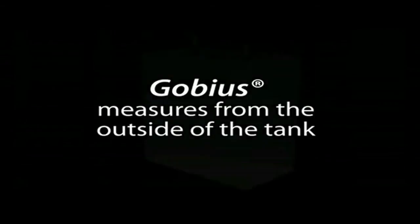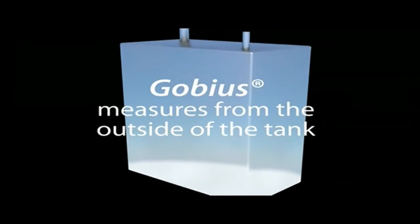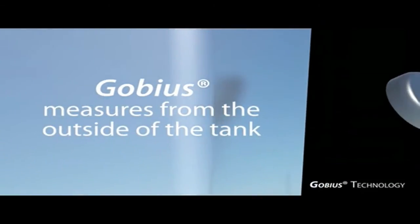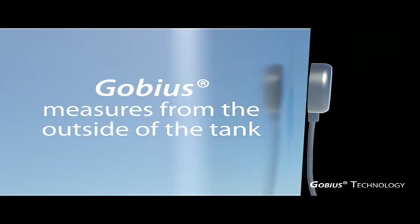Gobius is the first level indicator in the world that measures the contents in plastic, stainless steel, steel or aluminium tanks from the outside.